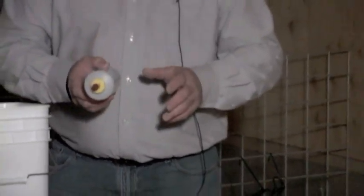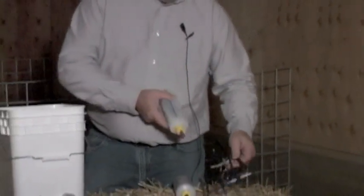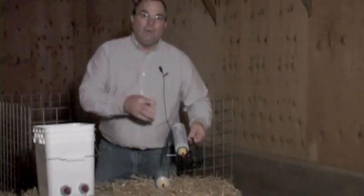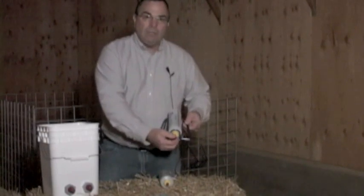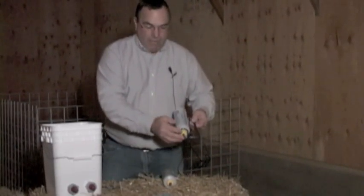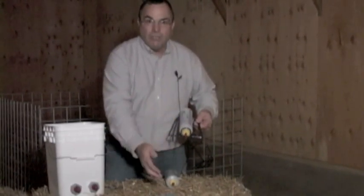Now the problem with that is if you take that same bottle and put it in a bottle rack and hang it there, then what happens is that if that lamb comes up and starts to nurse and then stops, that hole is still there and the milk's going to continue to flow out.